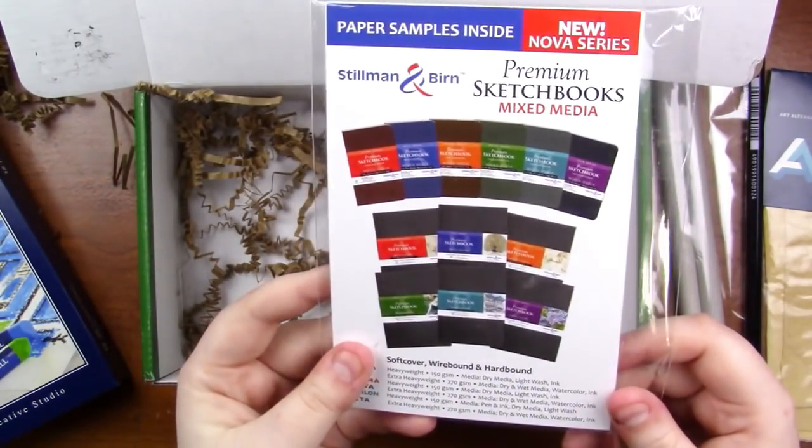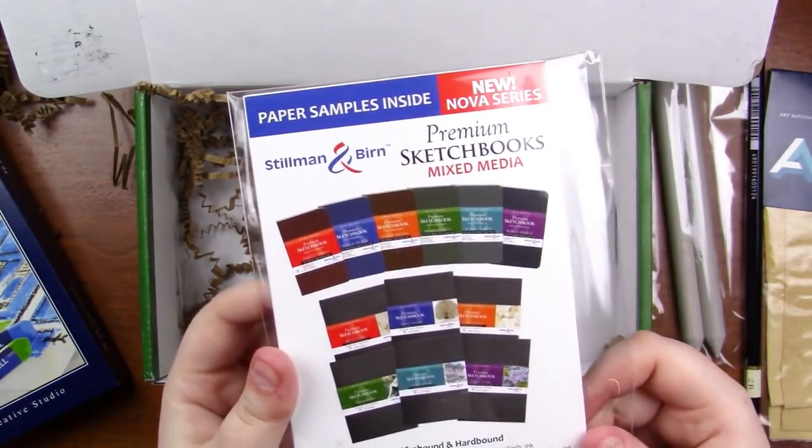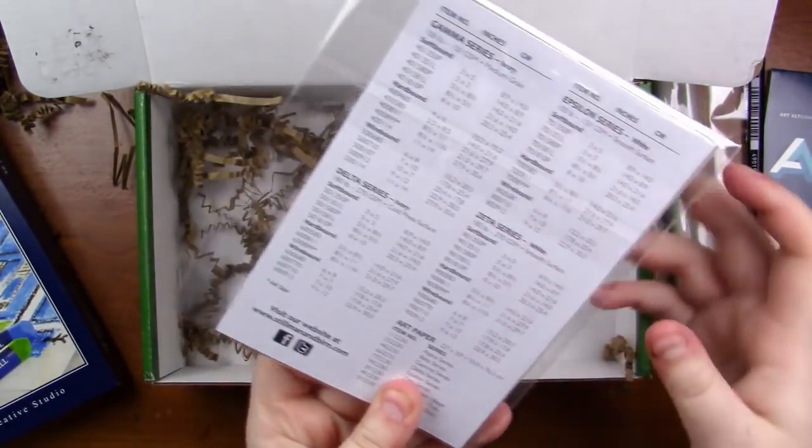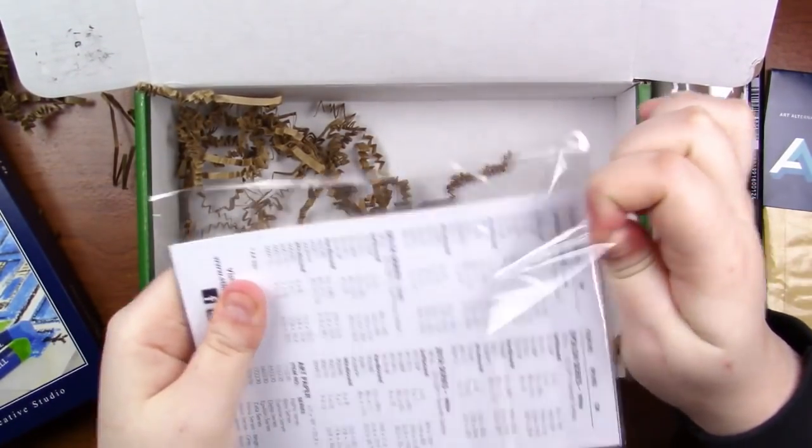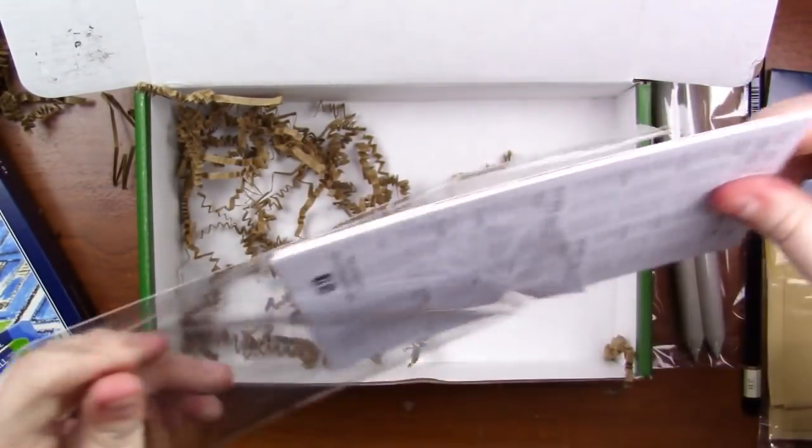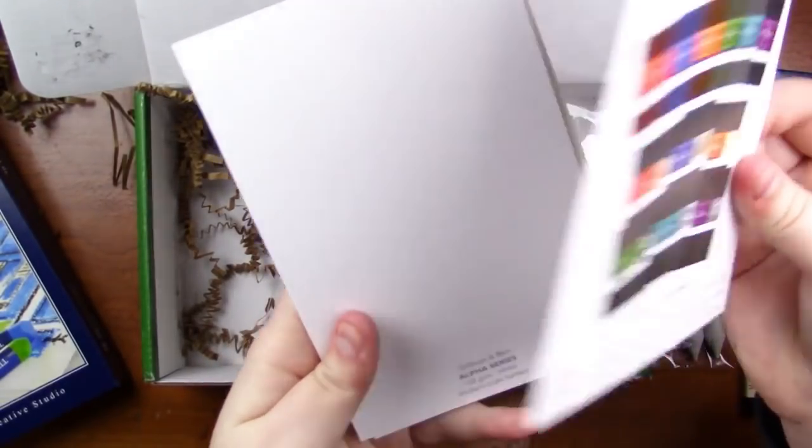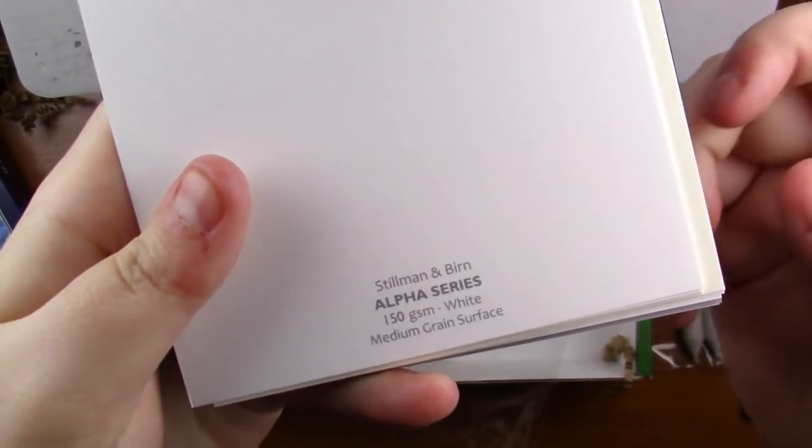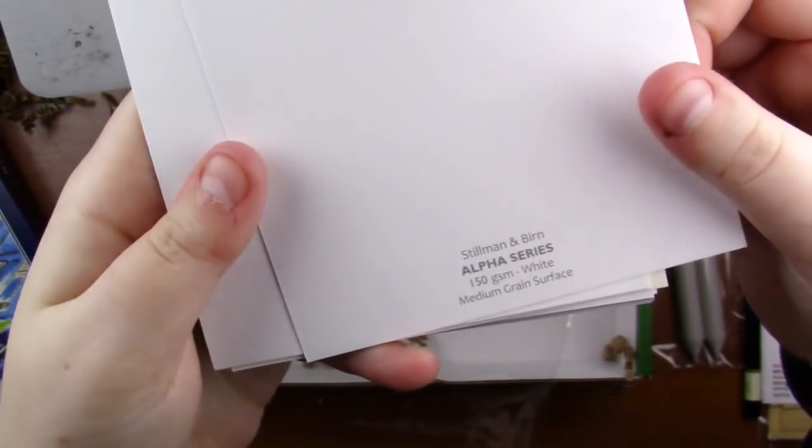And then lastly something I'm actually very excited about. This is a paper sample set of Stillman and Byrne sketchbook papers. I've heard a lot about Stillman and Byrne and I know that a lot of artists like them so I'm actually really excited to try them out. So it's got the little paper card telling you what's in it and then down here it actually tells you which particular paper.